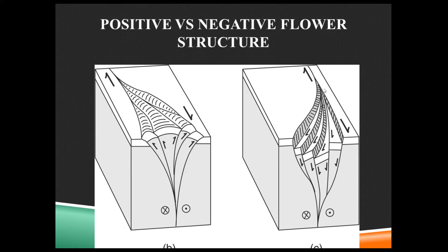In the other situation, where we have transtension, it's a releasing bend — this block going into the screen, this block coming out of the screen. The bend is going in the other direction, so we have the releasing bend with normal faulting and subsidence of the land, creating a basin here. This is called a reverse flower structure, or negative — versus positive for the other type.